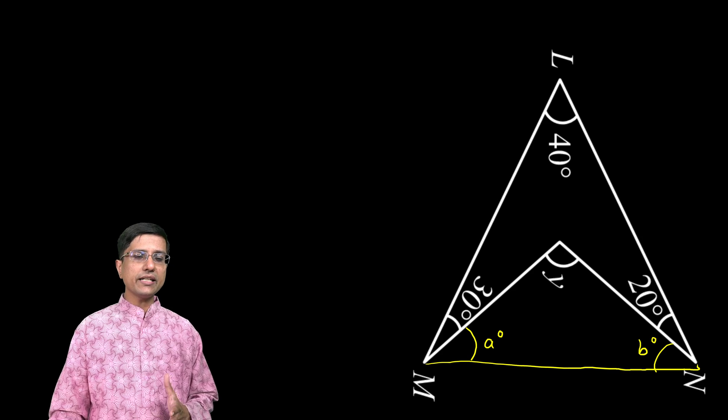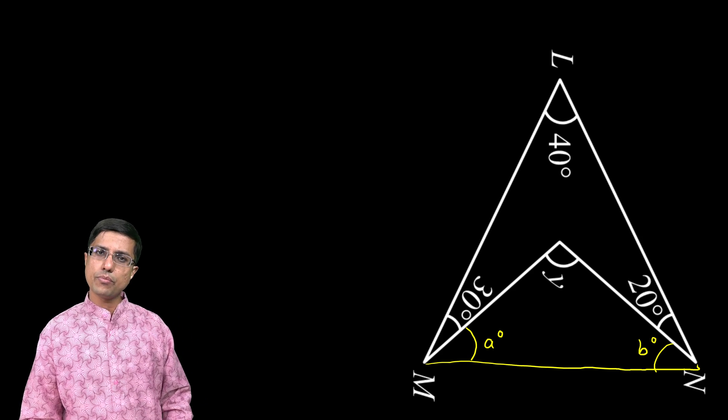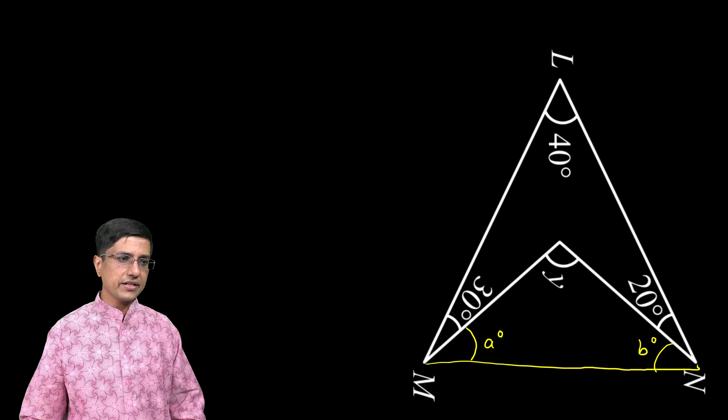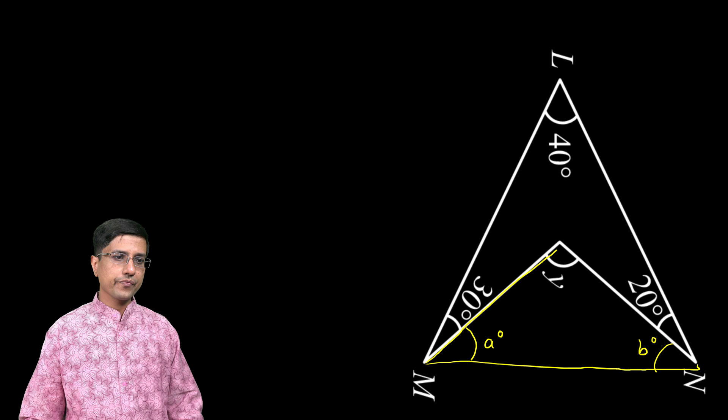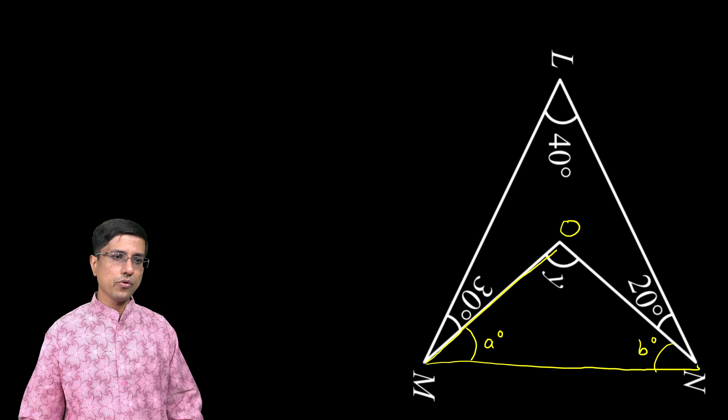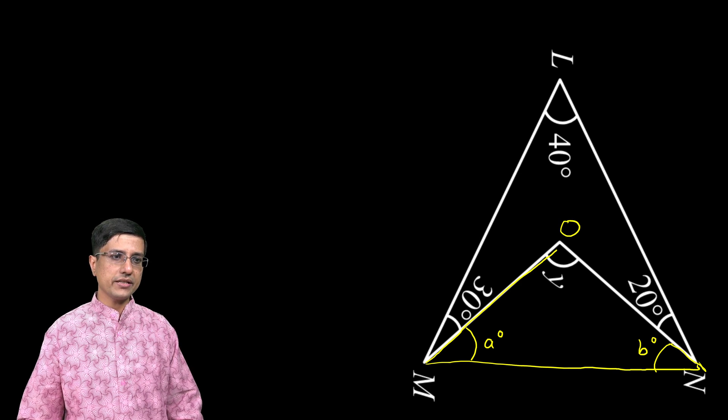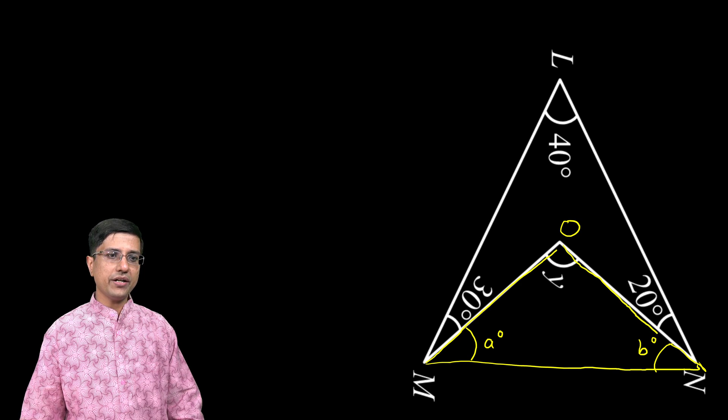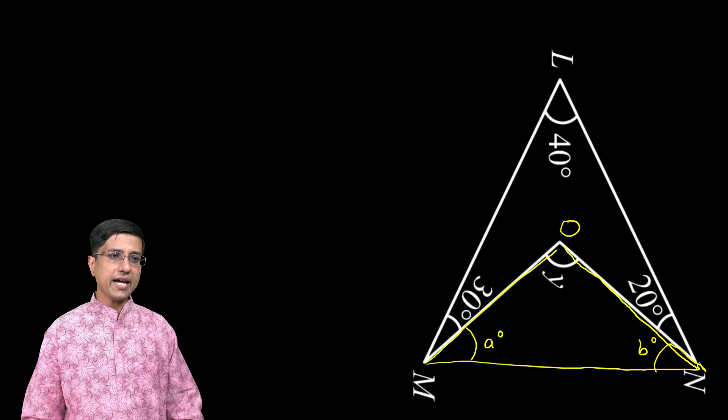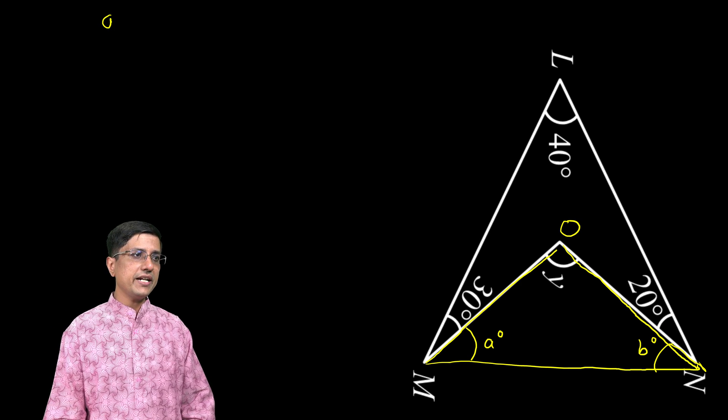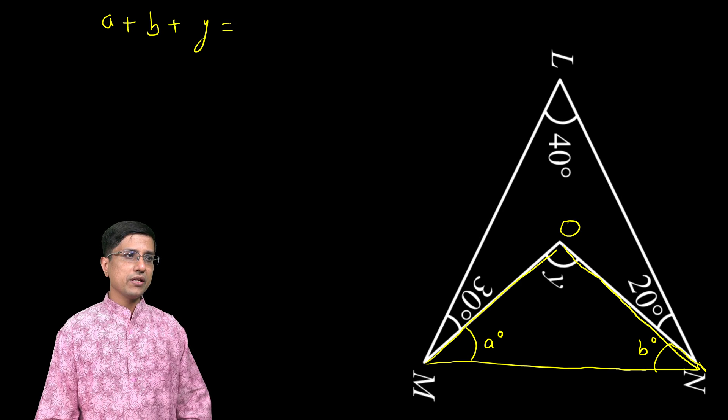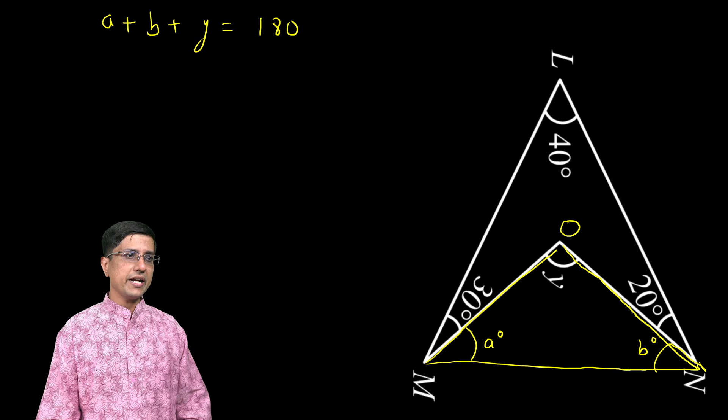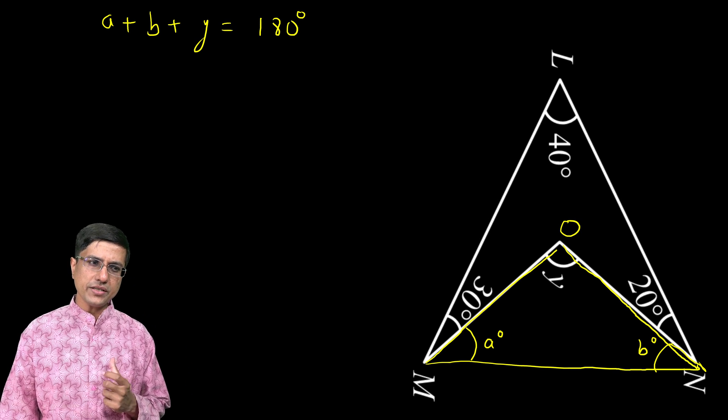Now notice that there are two triangles in this problem. One is this triangle, M - I will just call this point O - N. This M, O, N is one triangle, and the sum of the angles would be what? 180 degrees, we know that. So a + b + y = 180 degrees. We know that. Pretty simple.